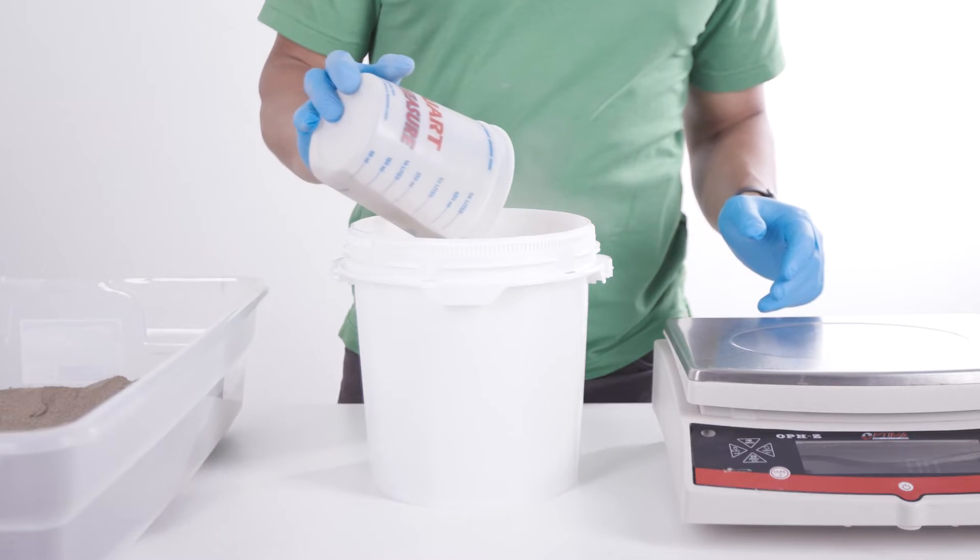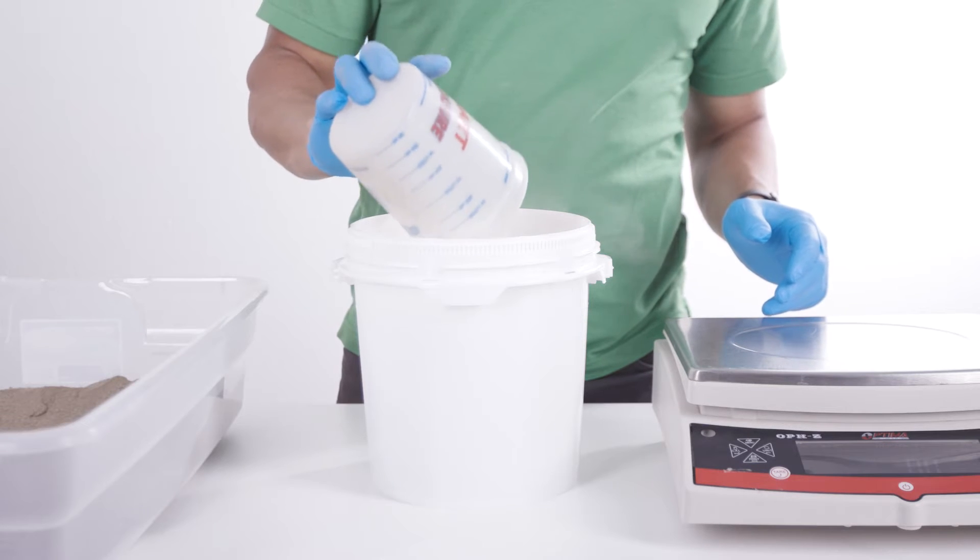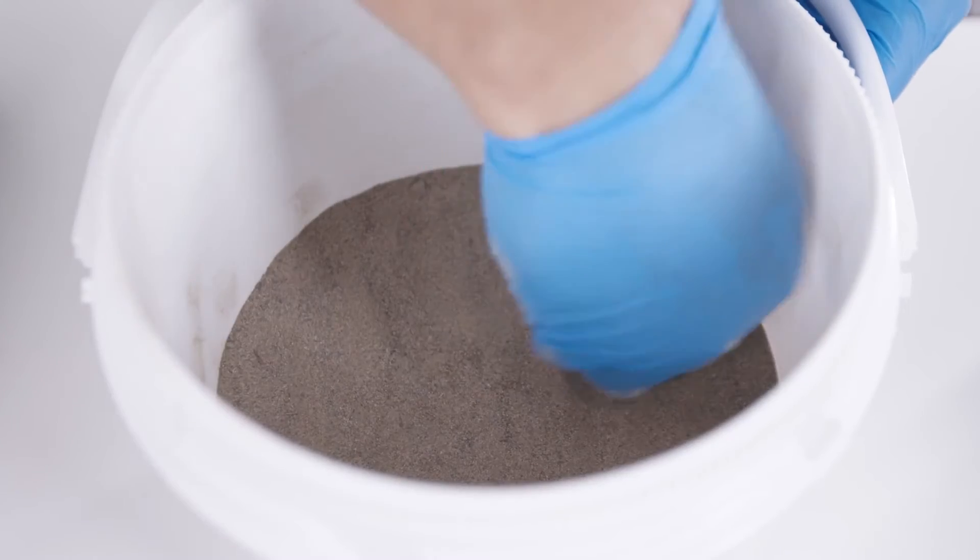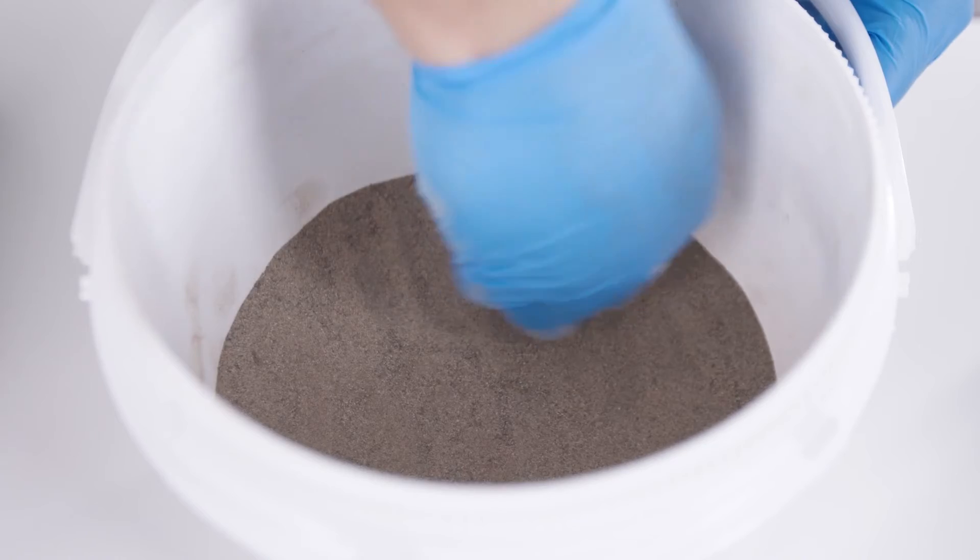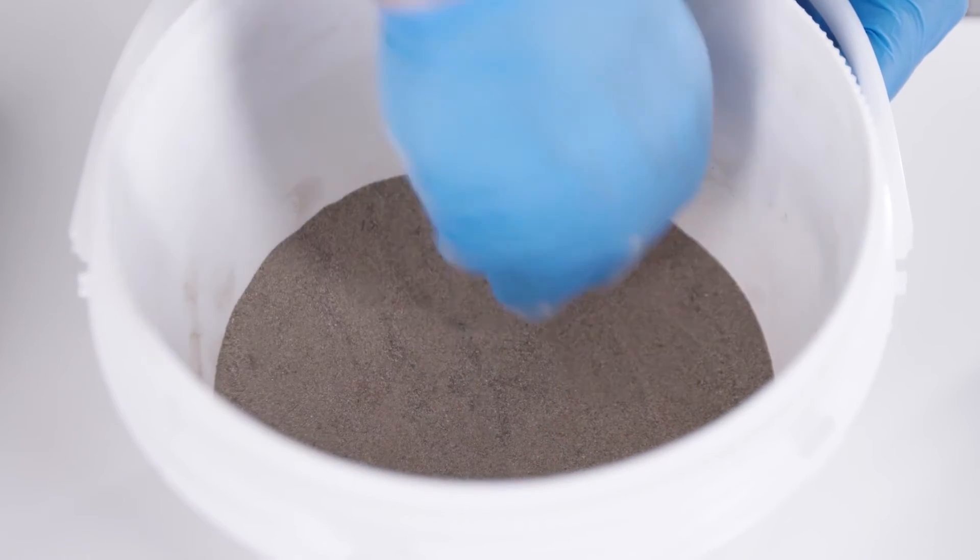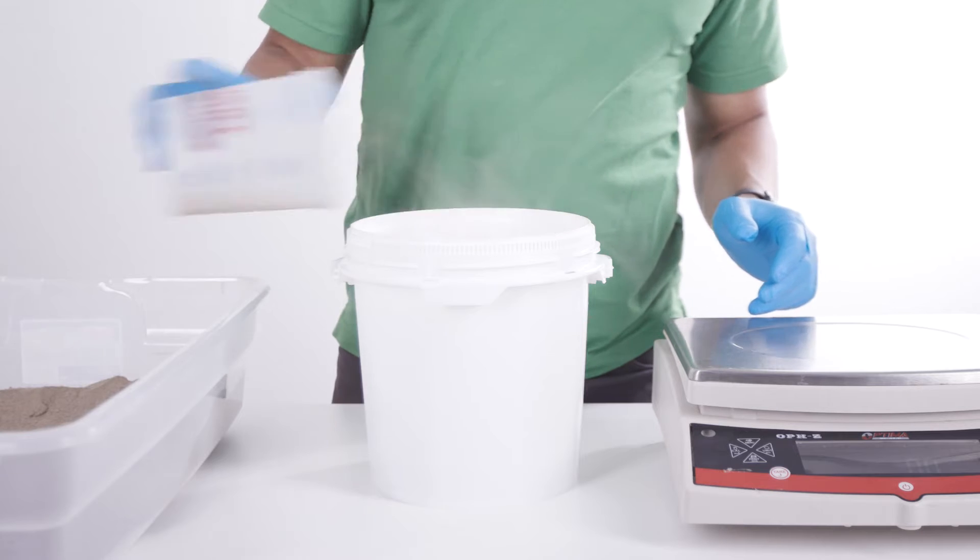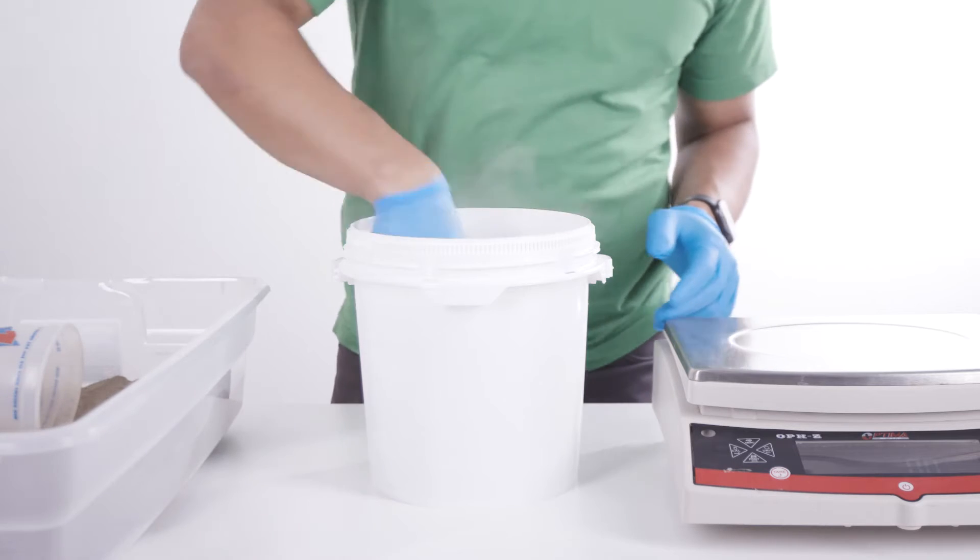To start the calibration, pack the soil into the calibration container at approximately the field bulk density. If you start with dry soil, control the bulk density by packing a known mass of soil into a known container volume. It's generally necessary to add the soil in layers, packing each layer before adding the next.